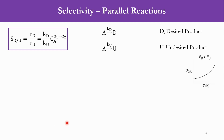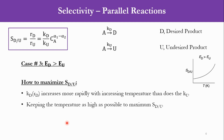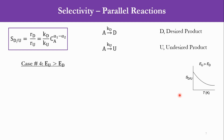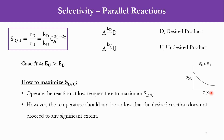Case 3 is based on activation energies for the desired and undesired reactions. If the activation energy of the desired reaction E_D is greater than that of the undesired reaction E_U, then with an increase in temperature, the selectivity value increases. So we have to keep the temperature as high as possible to maximize selectivity, since K_D increases more rapidly with increasing temperature than K_U. In Case 4, which is the opposite, E_U is greater than E_D. With increasing temperature, selectivity will decrease, so we have to keep the temperature at a low value.